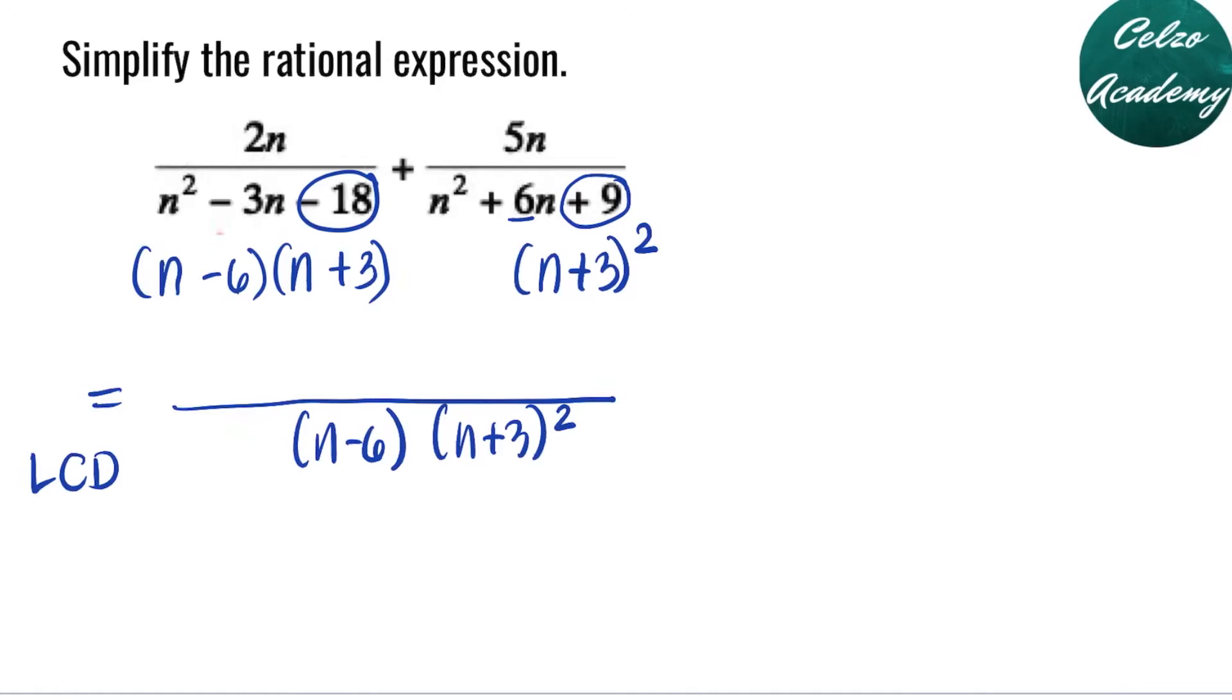Now, we need to find out what to multiply with the numerator 2n. Dividing the LCD with the first denominators n minus 6 and n plus 3, we still need to multiply 2n by n plus 3 to the first power or the same thing as n plus 3. Now, for the second fraction, we need to determine what to multiply with 5n. Dividing the LCD by n plus 3 to the second power, n plus 3 to the second power will cancel out. So we still have n minus 6. That's why we need to multiply 5n with n minus 6.